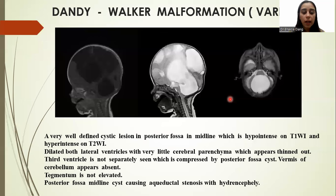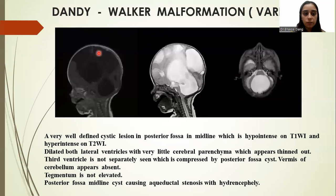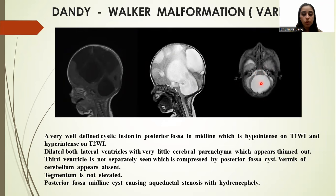This is a variant of the Dandy-Walker malformation in which we can see a well-defined cystic lesion in the posterior fossa in the midline, hypointense on T1-weighted images and hyperintense on T2-weighted images. Both lateral ventricles are dilated with very little cerebral parenchyma, which appears thinned out. The third ventricle is not seen separately, compressed by the posterior fossa cyst. The vermis of the cerebellum appears absent. The tegmentum is not elevated, and the posterior fossa midline cyst is causing aqueductal stenosis and hydranencephaly.